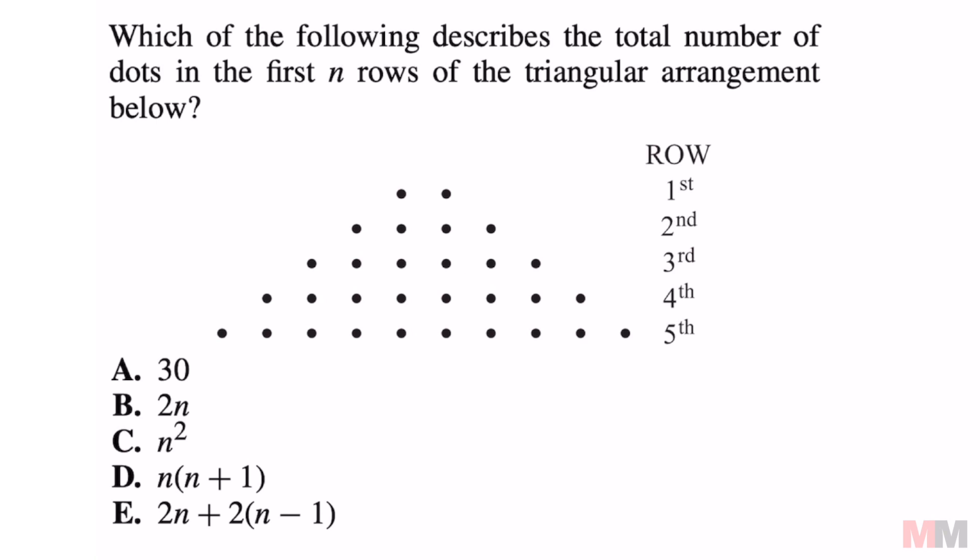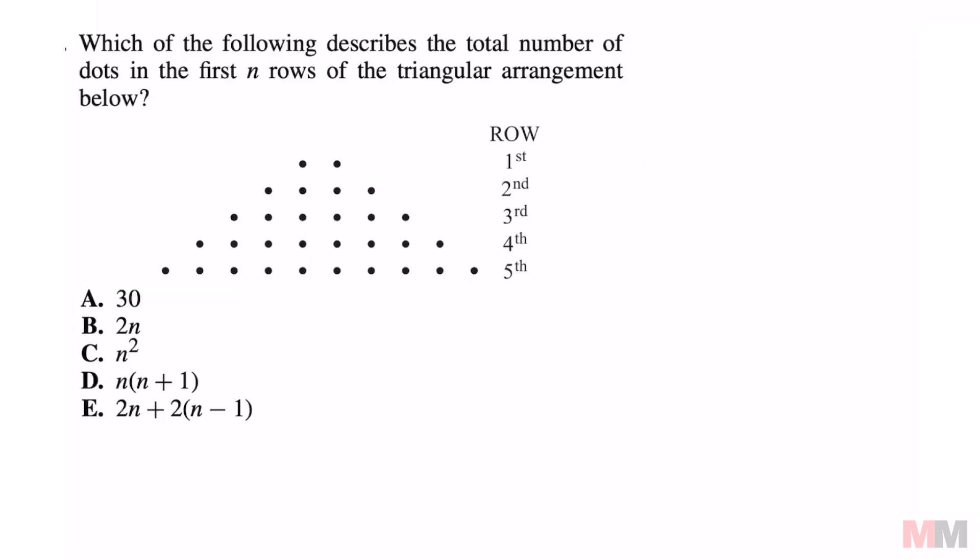Which of the following describes the total number of dots in the first n rows of the triangular arrangement below? Let's see what's going on with these dots first.